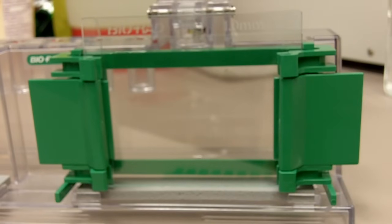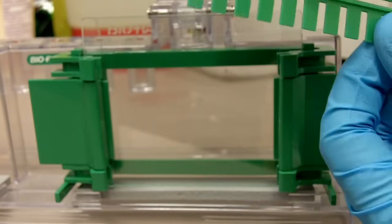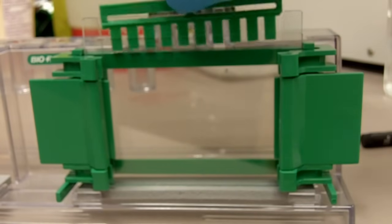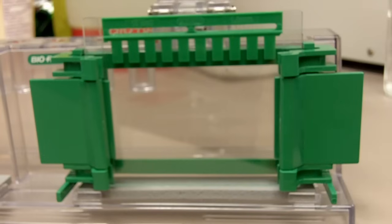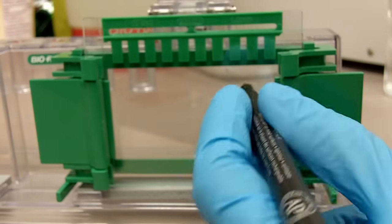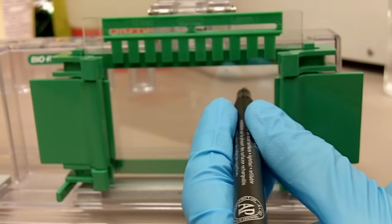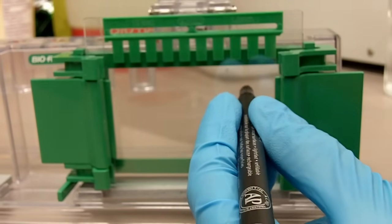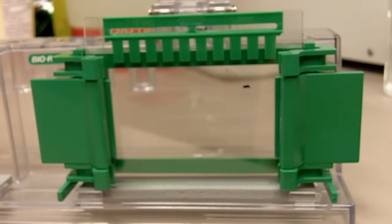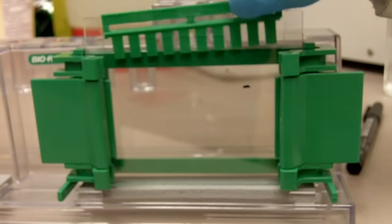After we have assembled the gel apparatus, what we need to do right now is we will take the comb and place it in between the glass plates like that. We'll take a marker and make a mark approximately one centimeter below the comb right there. We'll take the comb out.